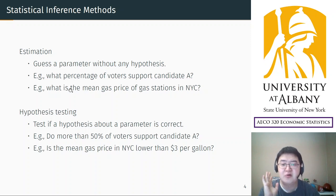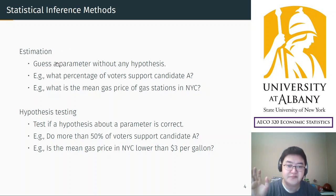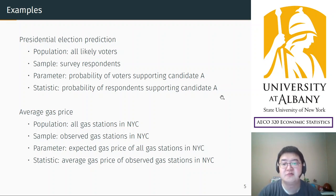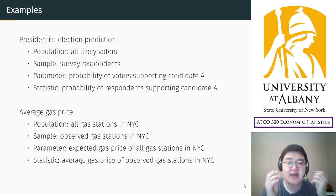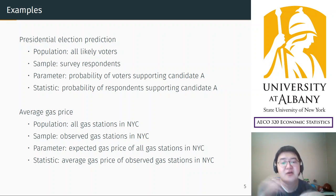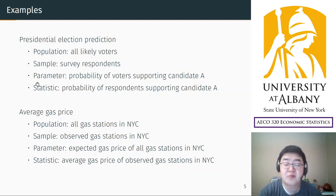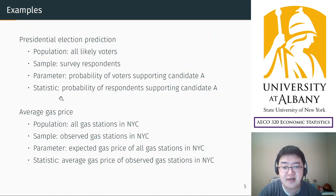In this chapter we are going to focus on estimation. For example, the presidential election prediction: it's an estimation problem. The population is all likely voters, the sample consists of survey respondents — you cannot ask all voters, so you survey a certain number. The parameter of interest is the probability of voters supporting a certain candidate, and the statistic you use is the probability of respondents who support candidate A.